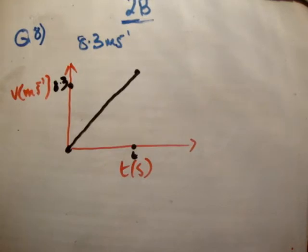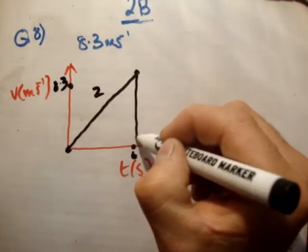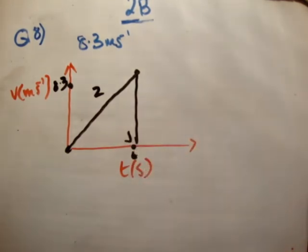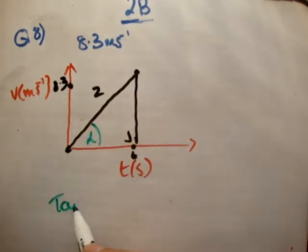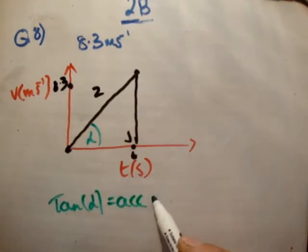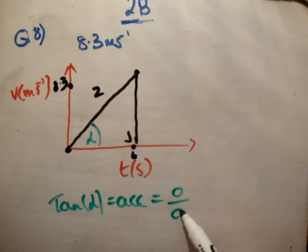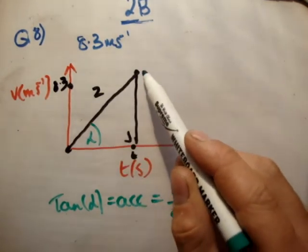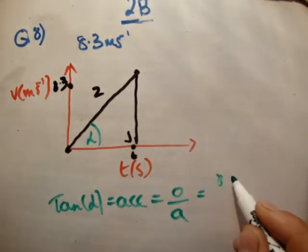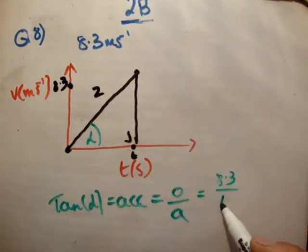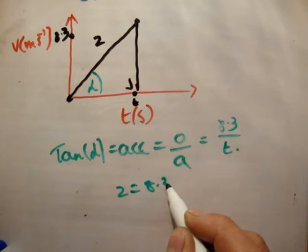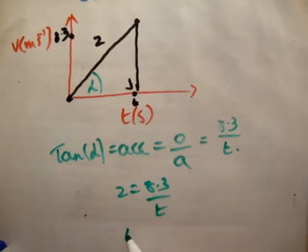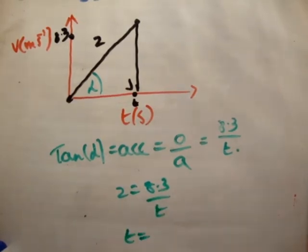We're told it's a uniform acceleration of 2 m/s². Let's create our triangle shape. We know that the opposite side is 8.3. You can call this angle alpha and say tan(α) is equal to the acceleration, which equals the opposite over the adjacent, equals 8.3 over t. But we know that the acceleration equals 2, so 2 equals 8.3 over t. Therefore, t equals 4.1 or something like that.